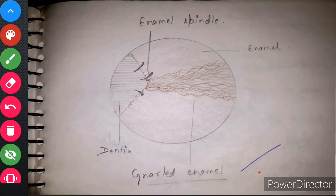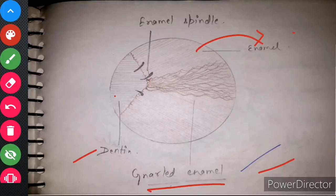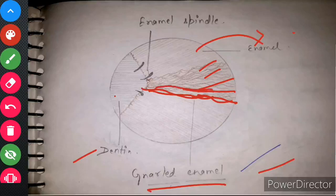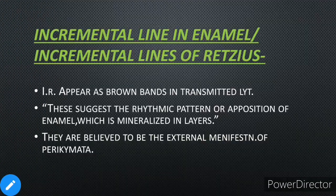This is a diagram of gnarly enamel in which dentine is shown by pencil and enamel is shown by brown color. The main point is that enamel rods run parallel from the surface and as they approach toward the DEJ, they interweave with each other.